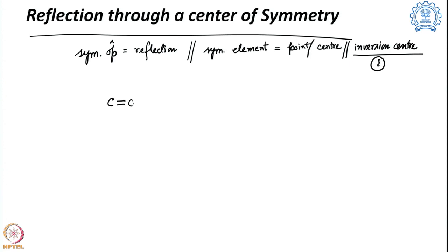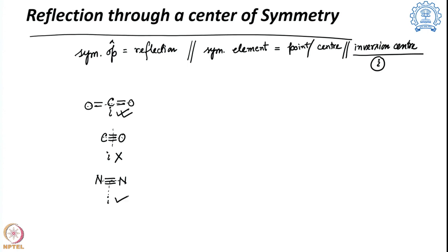The first example is carbon dioxide. There is a carbon in the center, and if you go through this center you reach another oxygen — both sides are the same, so there is a center of symmetry. In carbon monoxide, going through the center you find a carbon on the other side instead of oxygen, so no center of symmetry. For dinitrogen N2, going through the center leads to another nitrogen atom, so the center of symmetry is present.